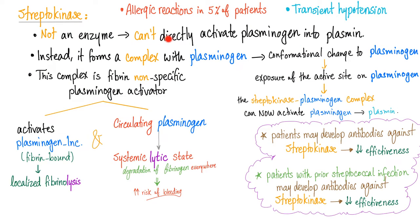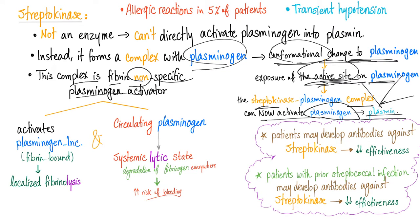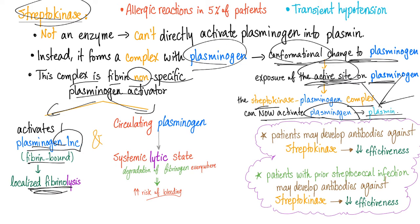Streptokinase is not an enzyme and cannot directly activate plasminogen into plasmin. Instead, it forms a complex with plasminogen, causing a conformational change that exposes the active site. This complex then activates plasminogen into plasmin. Plasmin degrades fibrinogen, fibrin, and stabilized fibrin. Because this complex is fibrin-non-specific, it activates both fibrin-bound plasminogen — yielding localized fibrinolysis — and circulating plasminogen, causing systemic lytic state and increased bleeding risk. This is why streptokinase is inferior to alteplase.